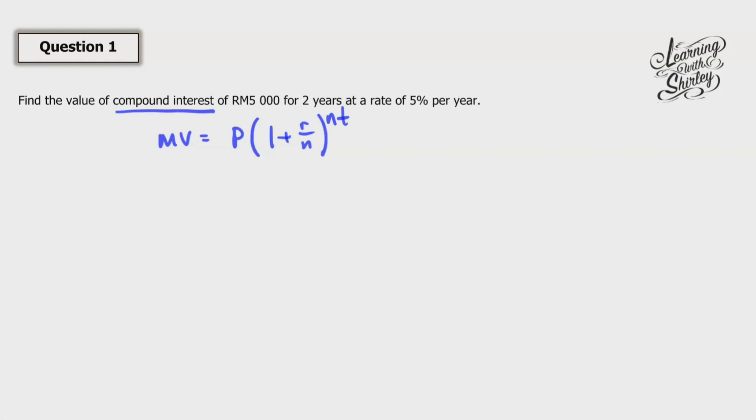From the information given, we got principle 5000 and then two years, which is the t, and then rate is 0.05. So this is r, which is 0.05. And then per year, which means that our n is equals to 1.